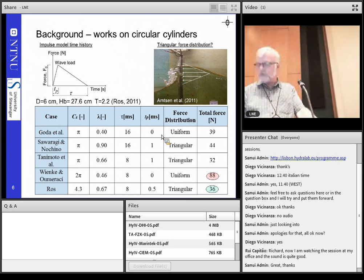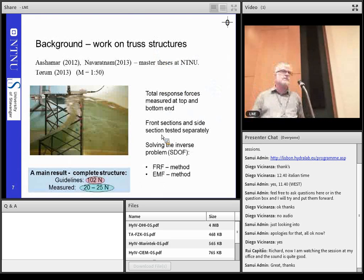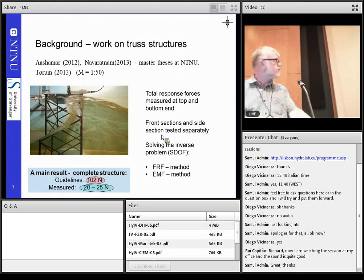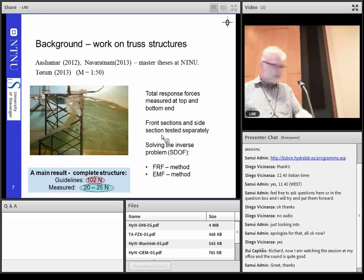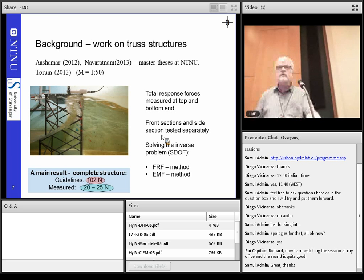We did also one test in a small scale, 1 to 50, on a truss structure similar to the one that is tested in the large-scale testing. And also here, using the standard methods for calculating the load of the total structure, we got guidelines that gave 102 newtons, we measured only a quarter of that. So, what is it, the methodology in the guidelines, like it's too conservative, or is it, well, we need to look a little bit more into this.